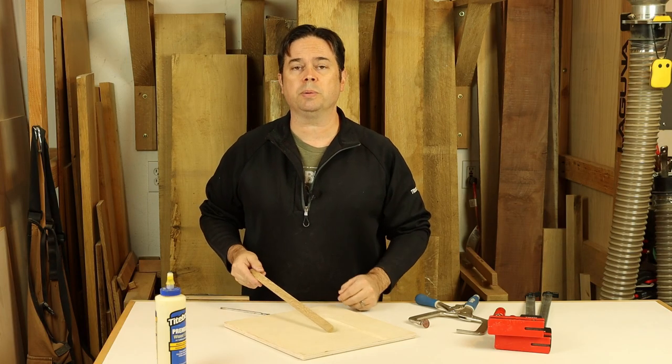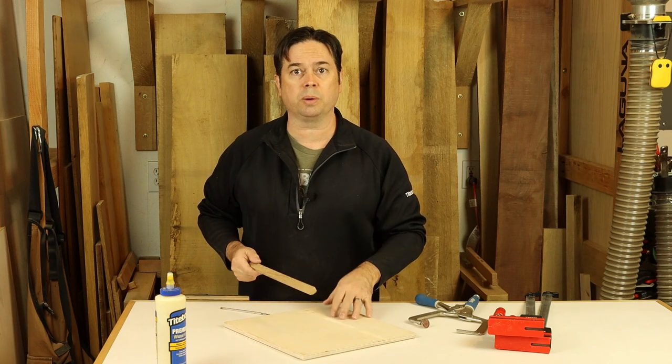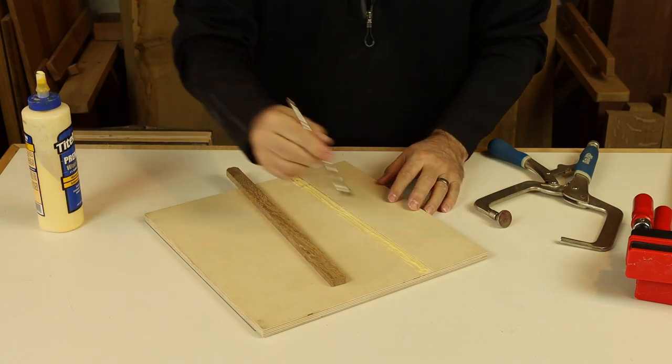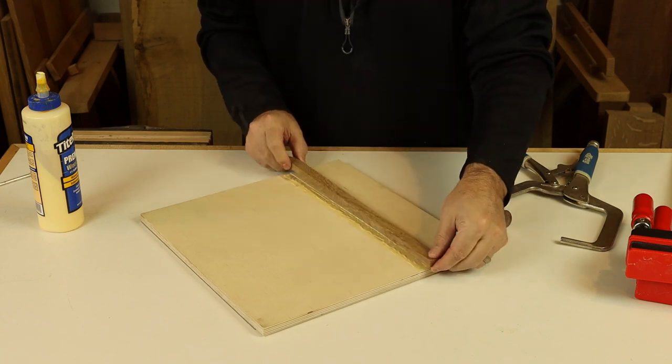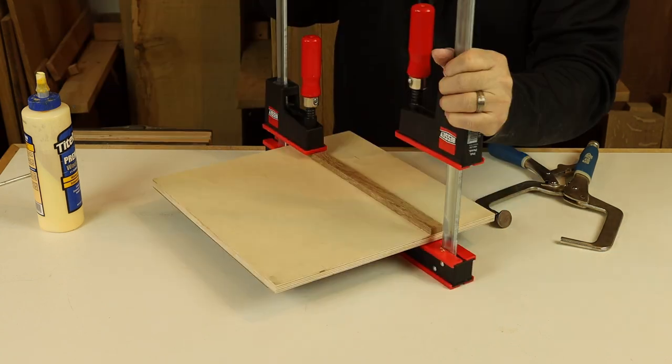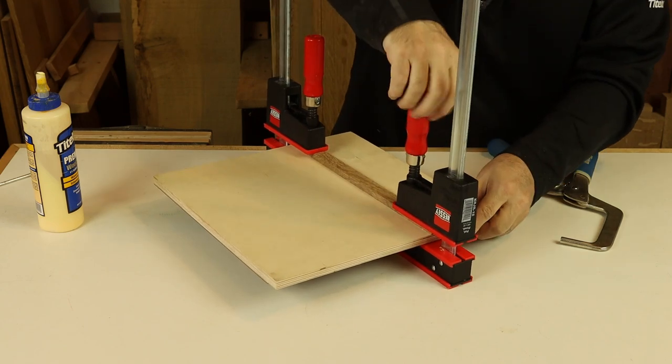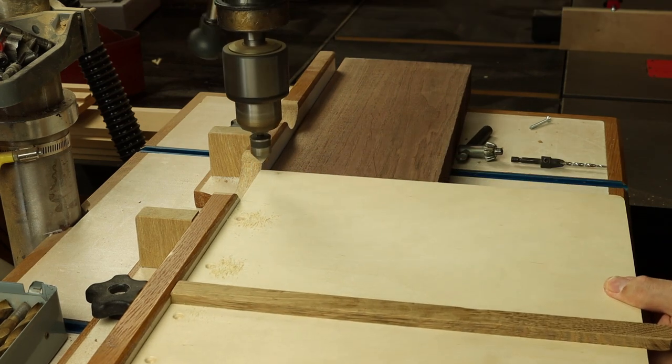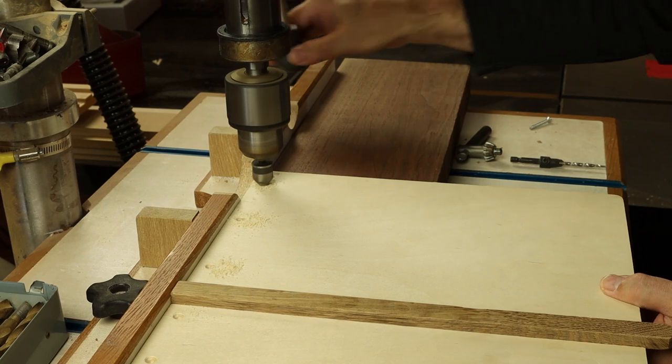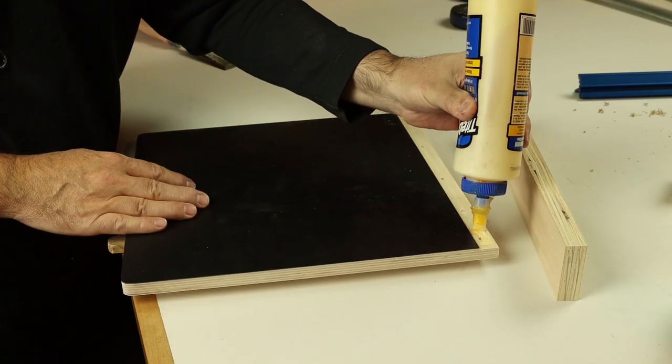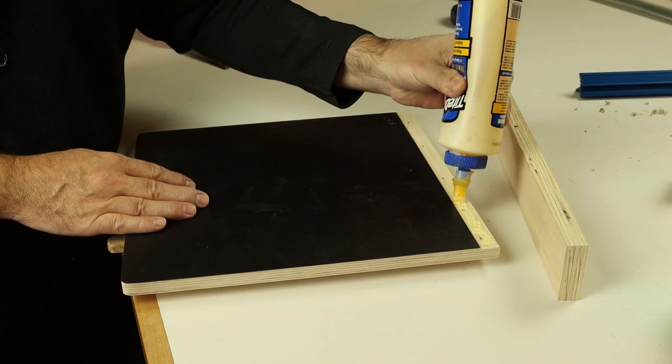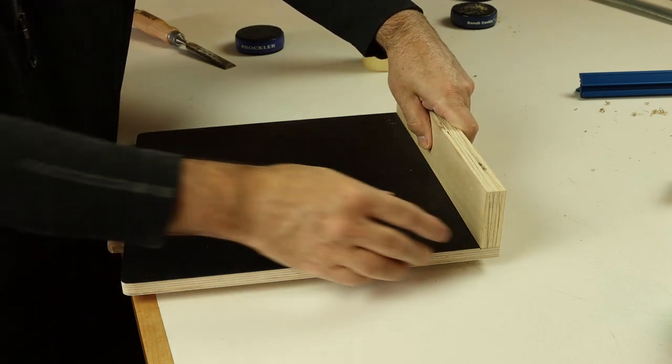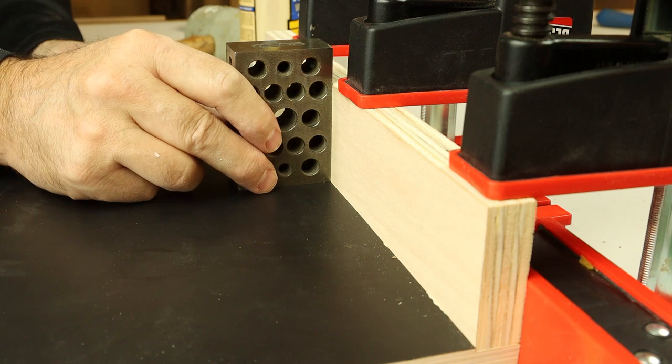Now that we have those grooves taken care of with the table saw, we can go ahead and glue in the runner on the bottom of the sled. Okay, we'll put a little glue on the sled and attach that fence with screws. And just make sure the fence is square as the glue dries.